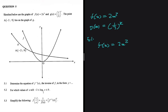We need the inverse of this function. How do we do that? We swap x and y and solve for y. So instead of f(x), I'm going to write x equals 2y squared — I've swapped x and y. Now I just have to solve for y, and then I'll have the equation of f inverse in the form y equals.